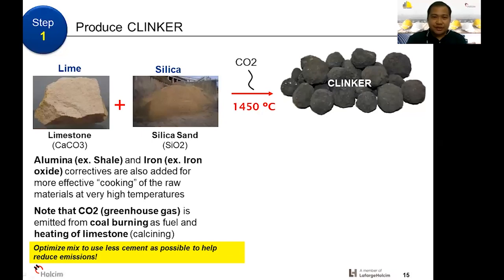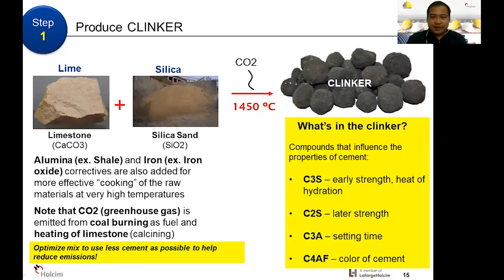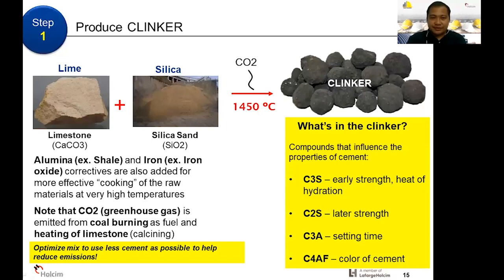Looking at the compounds that influence the properties of cement from clinker: C3S is responsible for early strength and heat of hydration. C2S is for late strength. C3A affects setting time. And C4AF will mainly affect the color of our cement but will not determine the quality of the product.